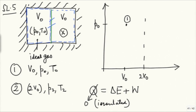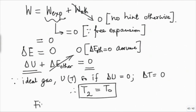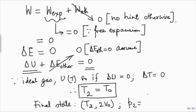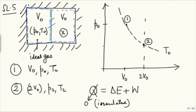With T₂ = T₀, we can now complete the process diagram. The final state lies on the T₀ isotherm at volume 2V₀. Using P₁V₁/T₁ = P₂V₂/T₂: temperature is the same and volume doubles, so the pressure must halve. Therefore the final pressure P₂ = P₀/2.